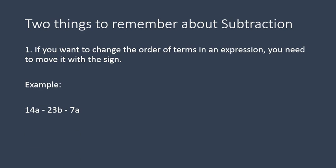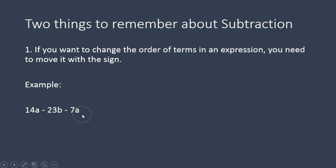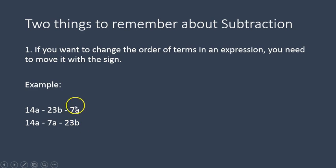Here's an example: if I had 14a minus 23b minus 7a, I want to get the 7a over to the 14a's. To do that, I have to move the negative sign with the 7a — that entire term moves. The negative sign stays with 23b, but the whole term with its sign moves over. Now I can join them together: 14a minus 7a will leave me with 7a, and the 23b's are a totally different thing — they stay separated by the subtraction symbol.